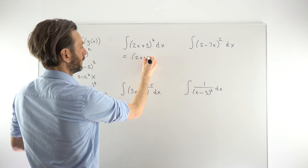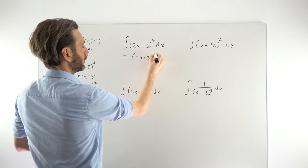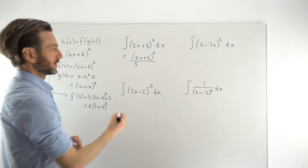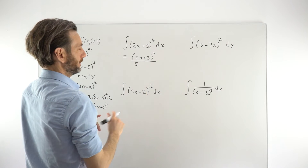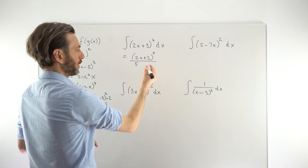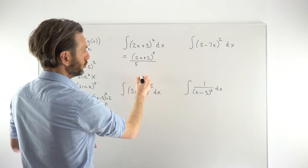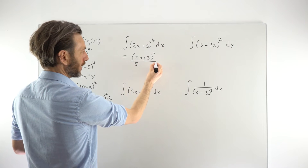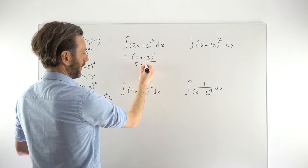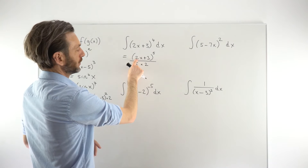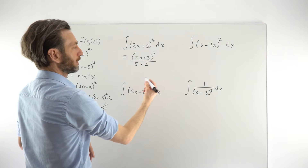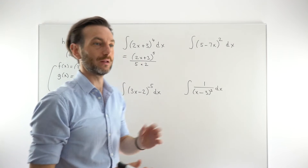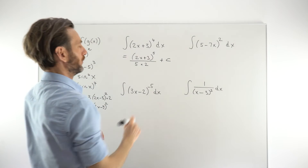So we're reversing the chain rule: increase the power by 1, just like normal power rule integration, and divide by that new power — so write that over 5. The thing that makes it the chain rule is that we also divide by the derivative of the inside of the bracket. The derivative of 2x plus 3 is 2 by the power rule. We can just put the 2 on the bottom of the fraction by multiplying it to the 5, since putting it on the denominator means we're already dividing. Then put a plus C on the end.